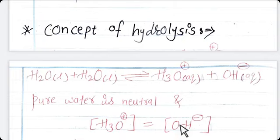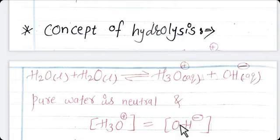If ions of any salt do not react with water, the solution is neutral. But when one or more salt ions react with water, there is no equality between the concentration of hydronium ion and hydroxyl ion, and the solution does not remain neutral — it may become acidic or basic depending on the type of salt. Such a reaction between the ion of the salt and the ion of water is called hydrolysis of salt.